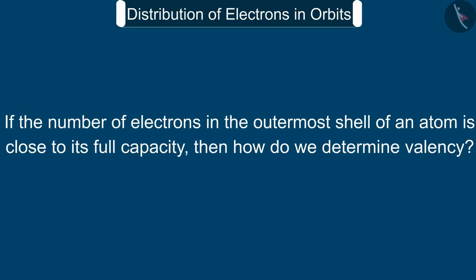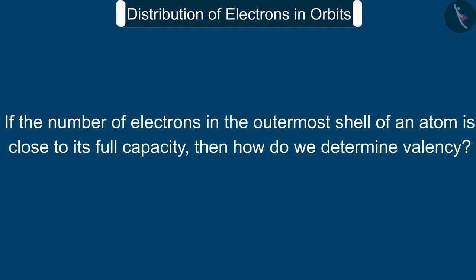But if the number of electrons in the outermost shell of an atom is close to its full capacity, then how do we determine valency? In this case, valency is obtained in another way. Let us try to understand it by an example.